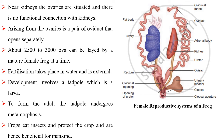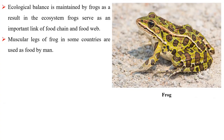Frog eats insects and protects the crop and are hence beneficial to mankind. Ecological balance is maintained by frogs in the ecosystem. Frogs serve as an important link of food chain and food web. The muscular legs of frogs are used as food by man in some countries.